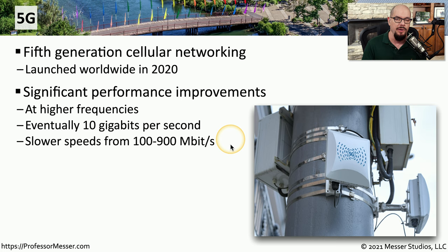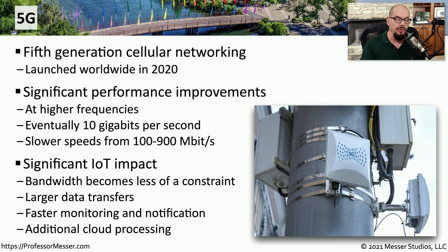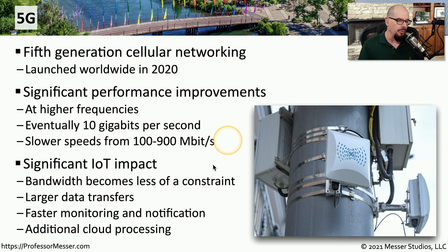This meant that in certain situations we could see throughputs over our mobile networks comparable to what we would get on our internal wired networks. This means anything we're doing on a local wired network, we could do on a mobile network, including Internet of Things connectivity, very large data transfers, and additional cloud processing.